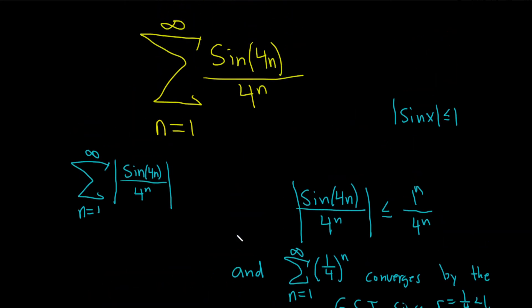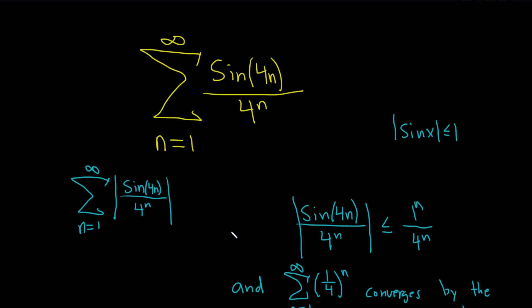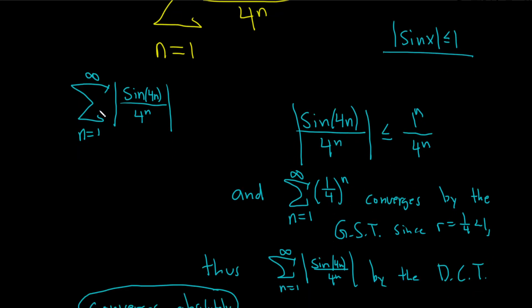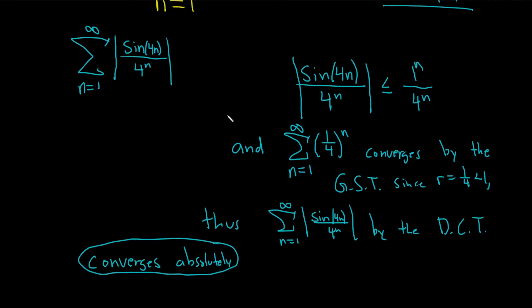Again, the original question said, does it converge absolutely, conditionally, or diverges? We decided to try to show absolute convergence because we have a sine function. And I was thinking if we take the absolute value of sine, we know that's less than or equal to 1. So let's try that. It worked out. We were able to compare it to a convergent geometric series. So therefore, by the direct comparison test, this series converges. That means that our original series converges absolutely.